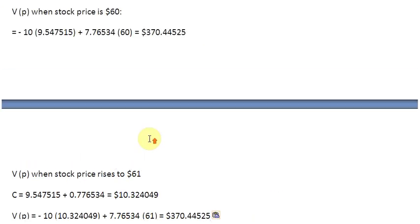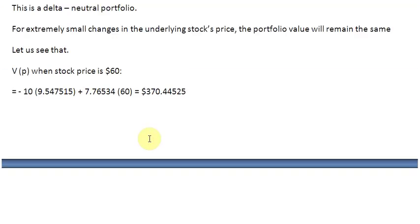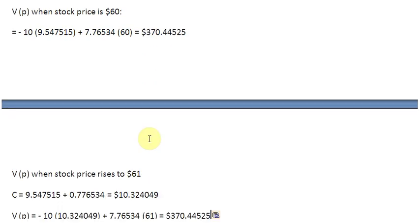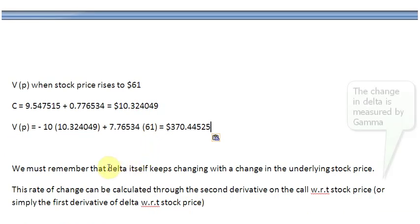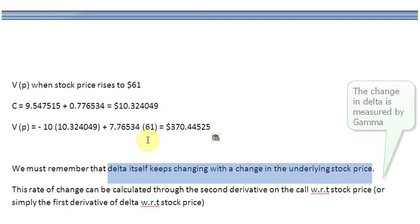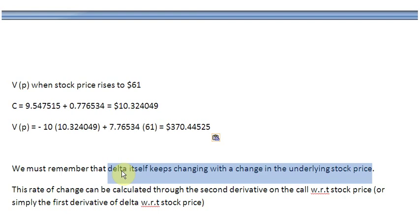Now, this looks pretty beautiful. Just by using a delta neutral portfolio, it seems that we can hedge all our risk. But there is a word of caution: please remember that delta itself keeps on changing with a change in the underlying stock price. If the delta did not change, this hedge could have worked for a longer period of time. But since the delta also keeps on changing in response to the change in the underlying stock price, this hedge is not going to work for a very, very long time.